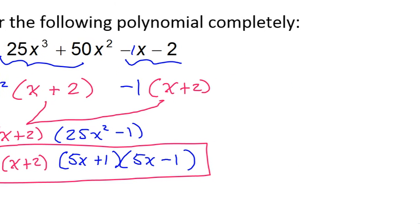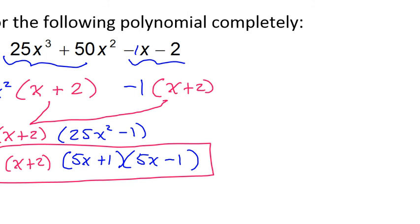So that tells me that I could start my synthetic division with that negative 2. So I've got negative 2 and I've got 25 and 50 and negative 1 and negative 2.